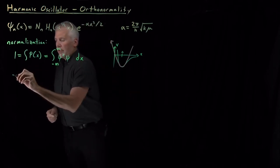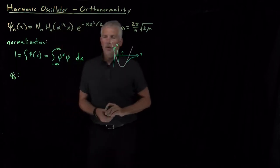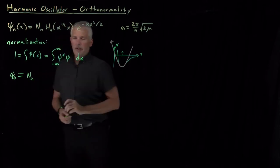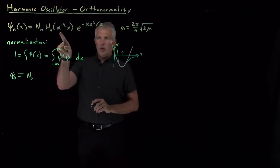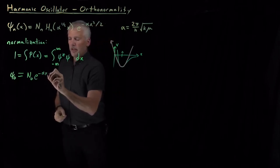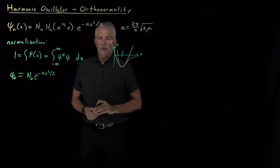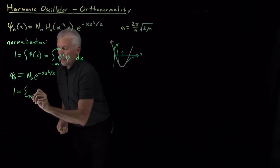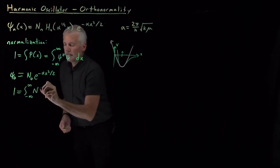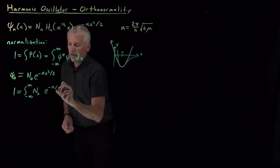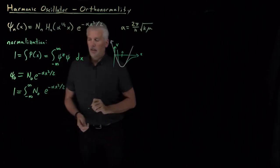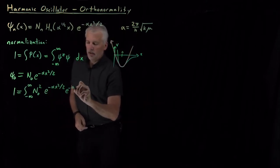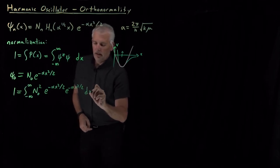Let's normalize the zeroth wave function, which is equal to some normalization constant N₀ that we have not yet determined. The Hermite polynomial is 1, and the Gaussian looks like e to the minus alpha x squared over 2. Normalization means I need 1 to equal the integral from negative infinity to infinity of the wave function N₀ times e to the minus alpha x squared over 2, times the wave function again — another factor of N₀ and another factor of e to the minus alpha x squared over 2 — integrated over x.